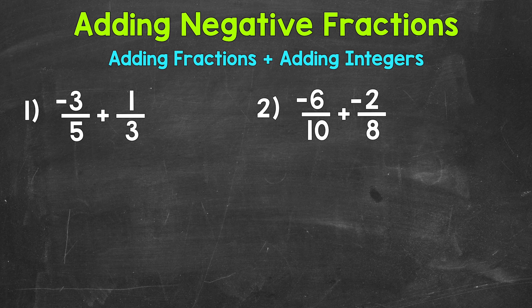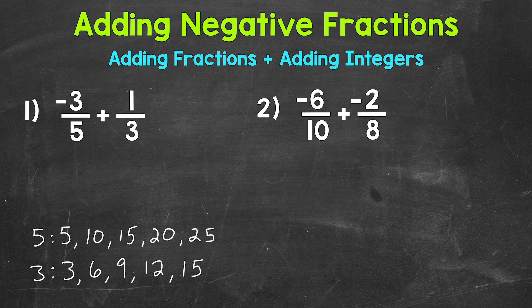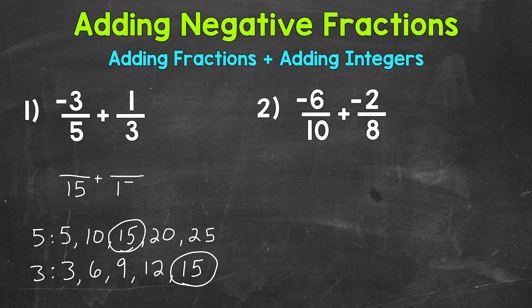You may be able to figure out the least common multiple without writing out the multiples, but I'll write them out for a quick refresher. The first five multiples of five: 5, 10, 15, 20, 25. And the first five multiples of three: 3, 6, 9, 12, 15. So we are going to use 15 for our least common denominator.